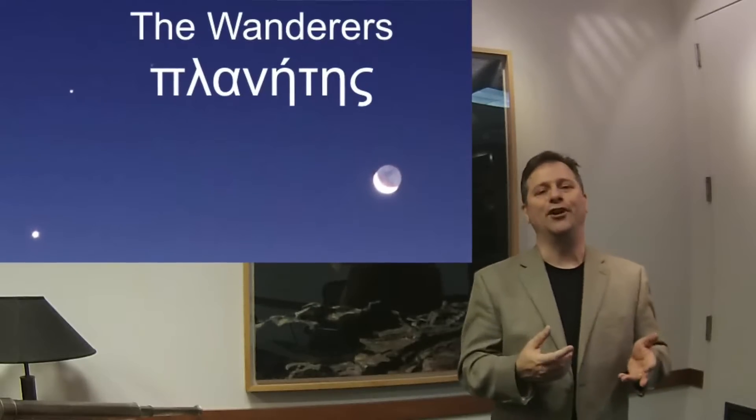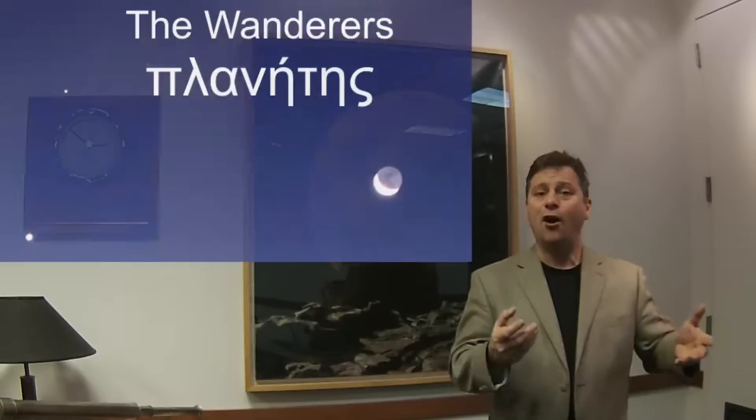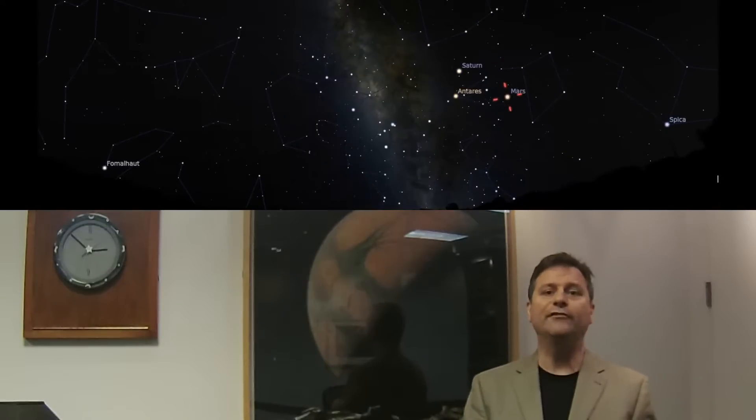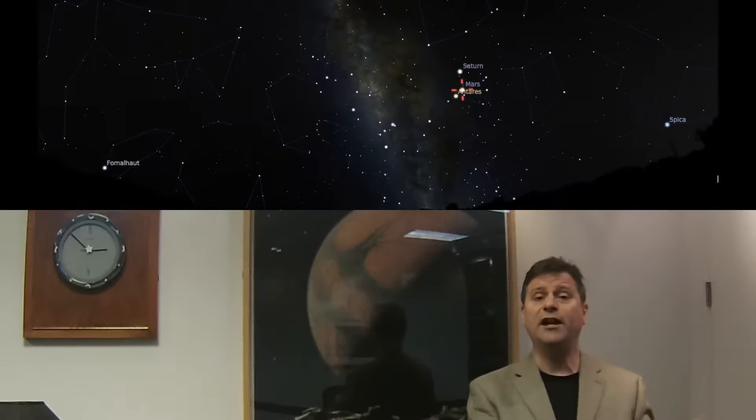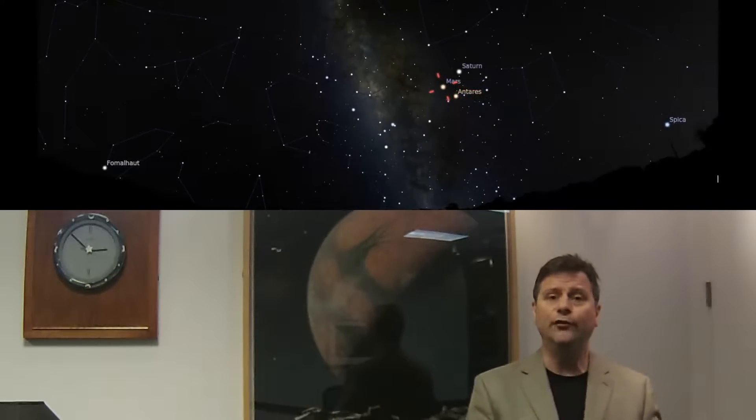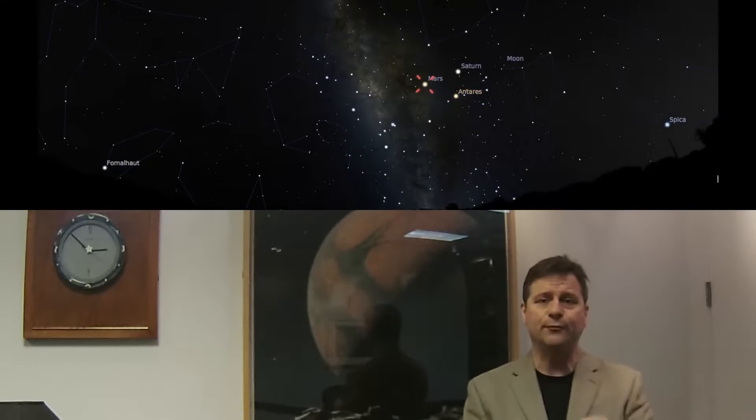So what are the wandering stars? The wandering stars also appear to rise in the east and set in the west just like all the other stars. However, they steadily drift eastward every day. So over a very short period of time, over many days, if you watch them day after day after day,